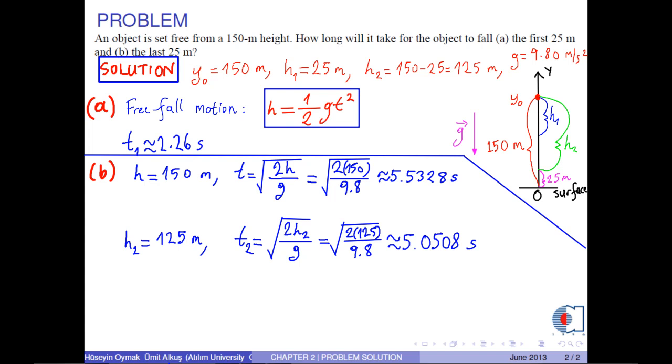Meanwhile, the formula for the desired time is t minus t2. Consequently, the time for the last 25 meters is approximately 0.482 seconds.